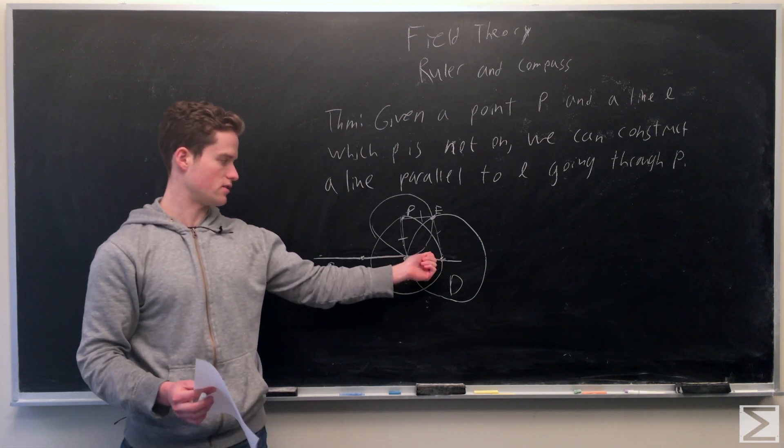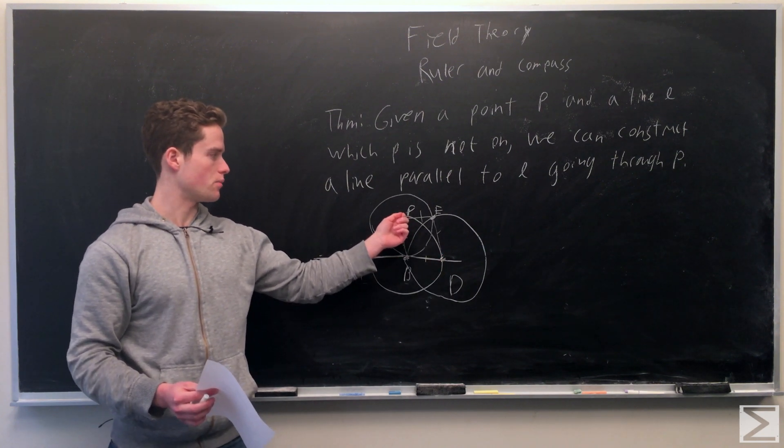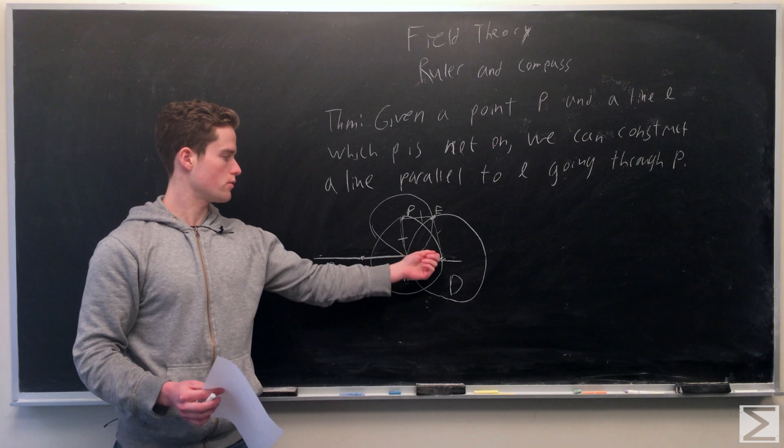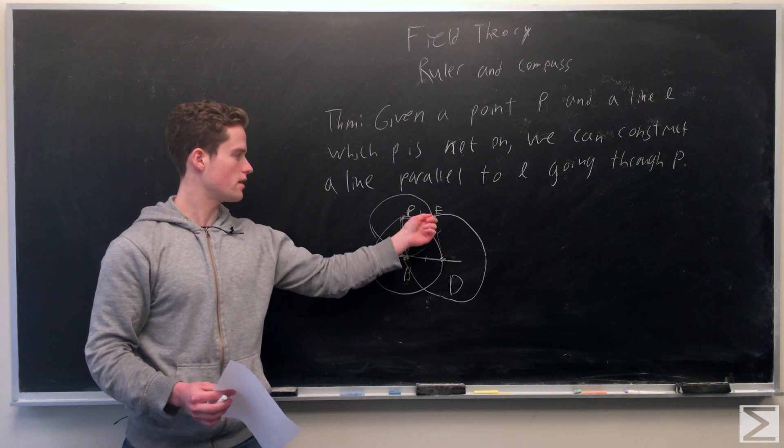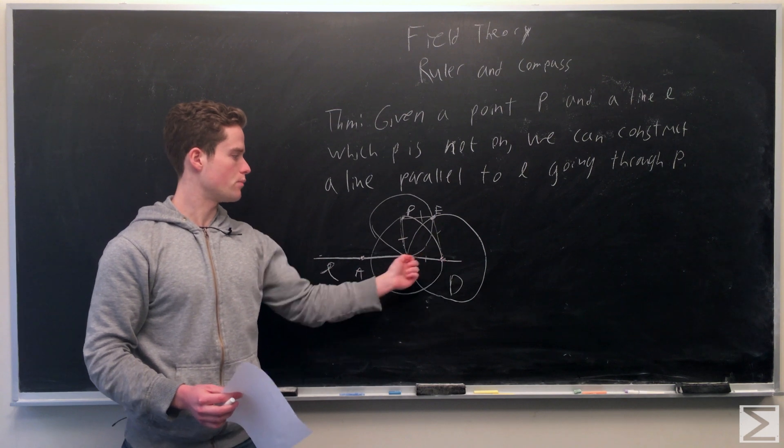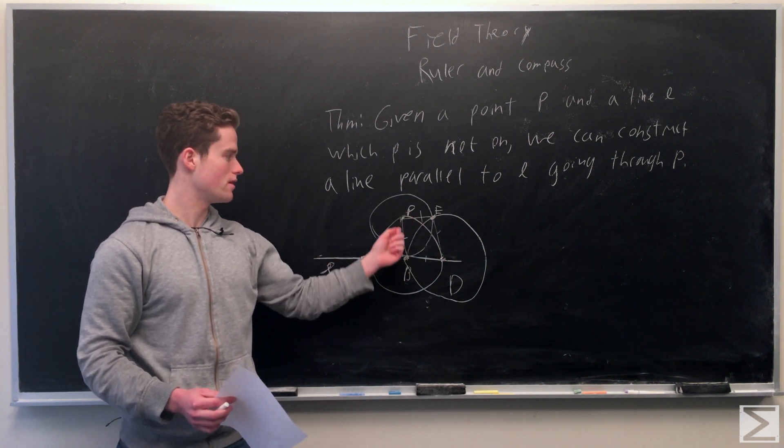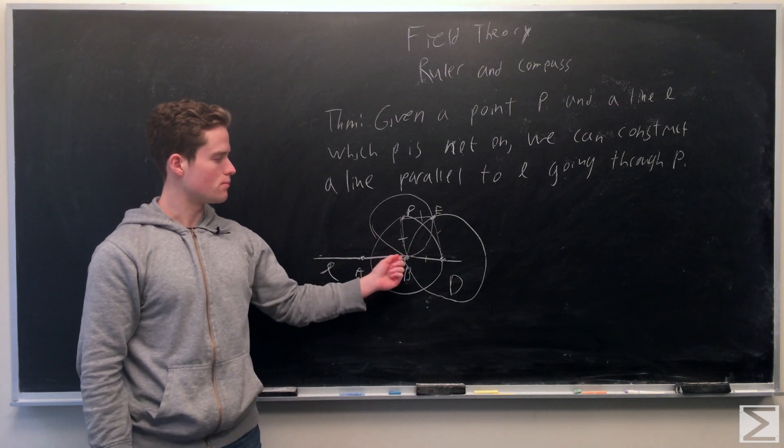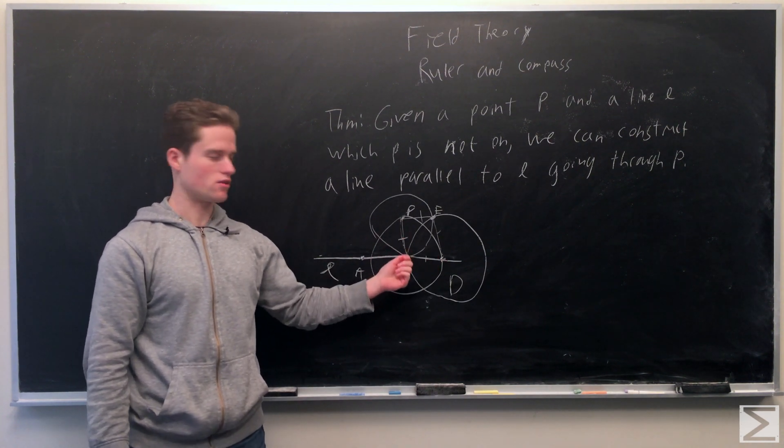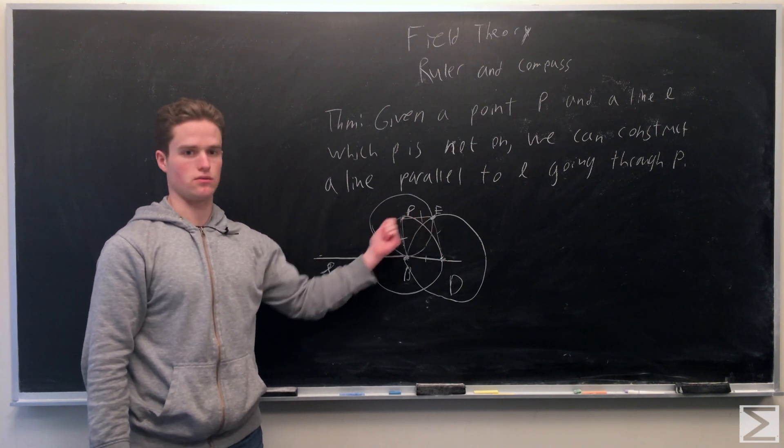Then we're going to draw a circle radius PB around D and P. Note B, D, and then where these two circles intersect, we call it E. BD, DE, EP, and PB all have radius PB from our construction. This is a rhombus.